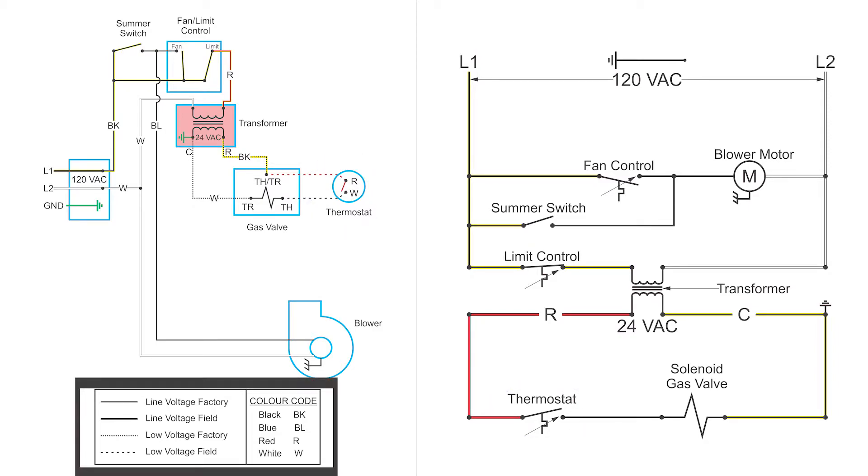Now at this point we should look at that legend down below where we can find all the color codes of the wires. And not to mention the type of wiring put in. The top one is line voltage factory. That is wiring put in by the manufacturer. That's 120 volts. The next one is line voltage field. That is the 120 volt wiring that's put in by your electrician.